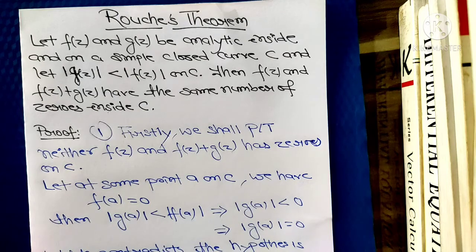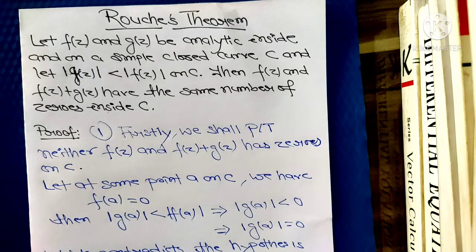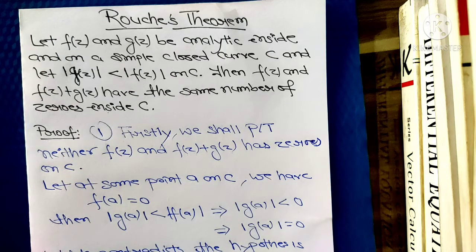Let's see the statement of Rouché's theorem: let f and g be analytic inside and on a simple closed curve C, and let |g(z)| < |f(z)| on C. Then f and f plus g have the same number of zeros inside C.